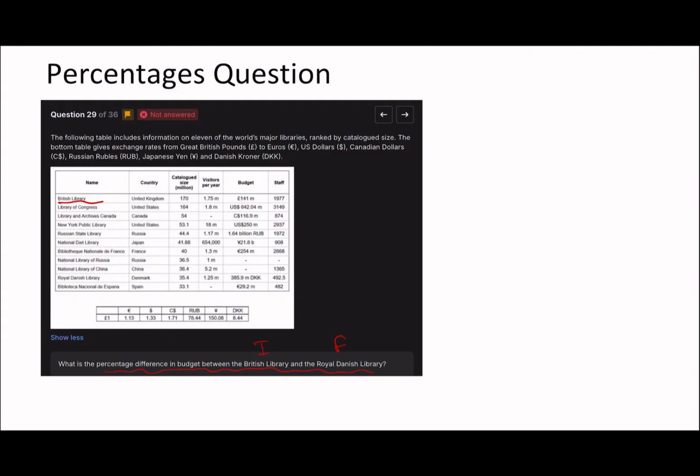If you guys are new around here and haven't seen my first percentages video, I would highly recommend you check that one out because I talk about some of the interesting concepts there and main ideas before diving into questions. So British Library, Royal Danish Library. One pound equals 8.44 DKK. So since this is the initial, I'm going to convert the 140 million into DKK, which is Danish krona. So it's going to be this times that.